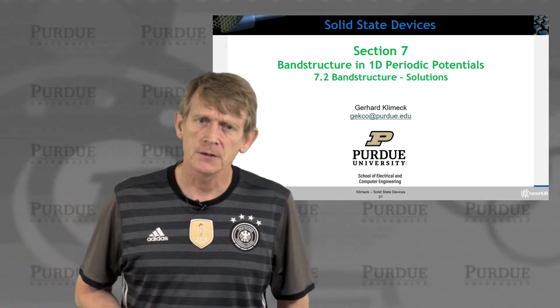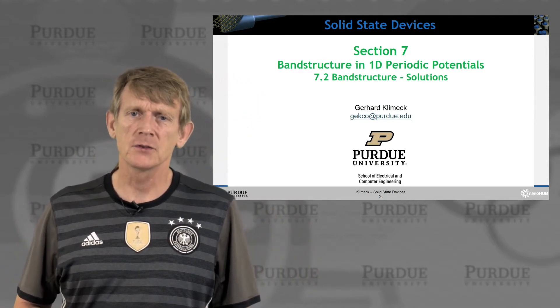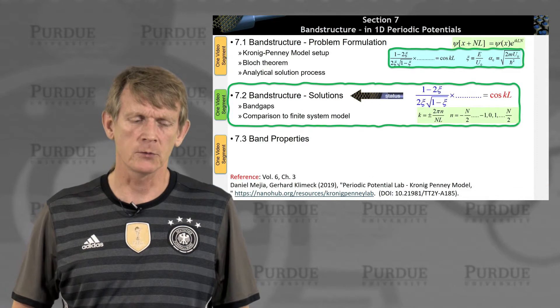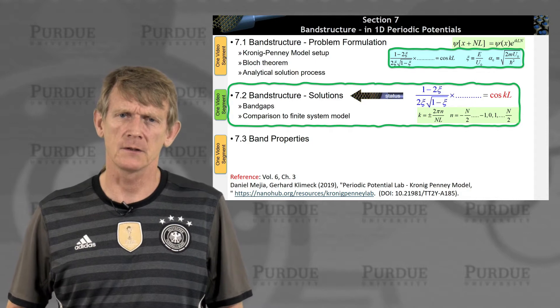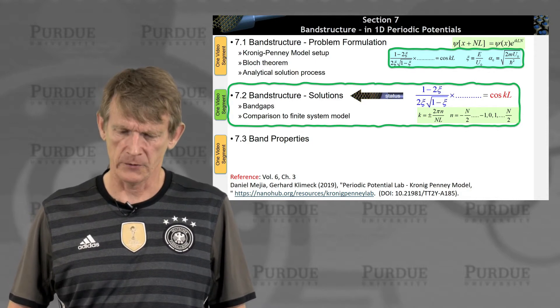So here's section 7.2. We're looking at the solutions to the band and periodic potential problem, and we'll look at band gaps and compare the solutions to the finite system we had calculated before.